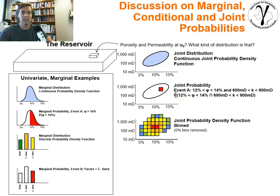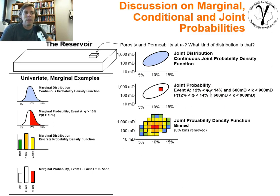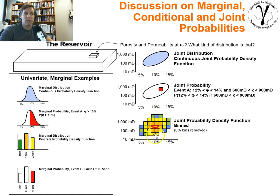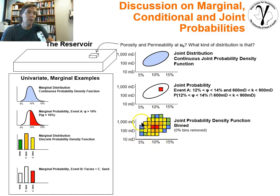We denote it as a probability using the intersection symbol, a comma, or an 'and' symbol. We could also represent all possible joint probabilities in boxes over a mesh covering the entire solution space of porosity and permeability. This represents the entire joint probability density function, and we can visualize and understand how the properties of porosity and permeability vary or behave together — which is pretty useful.